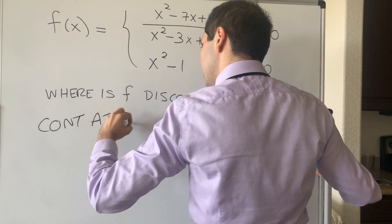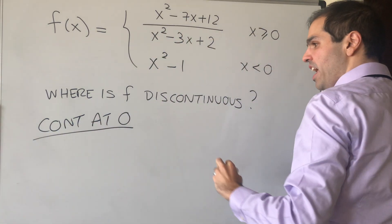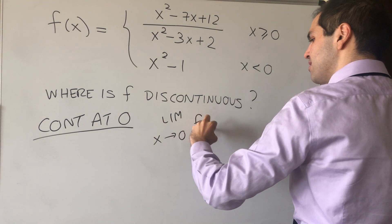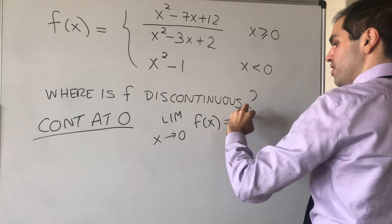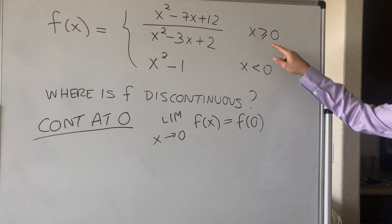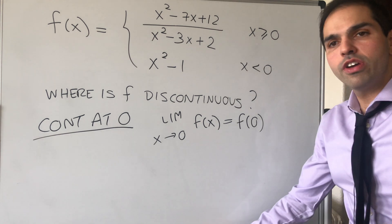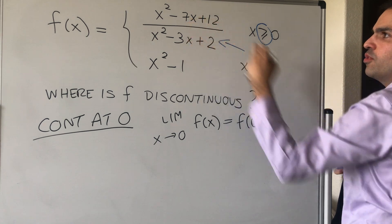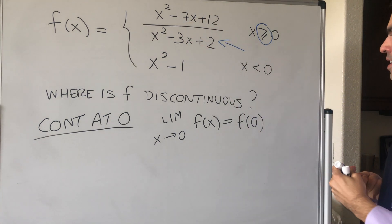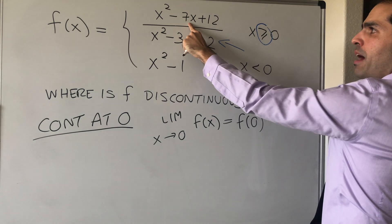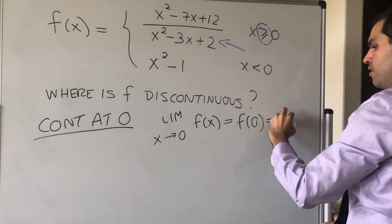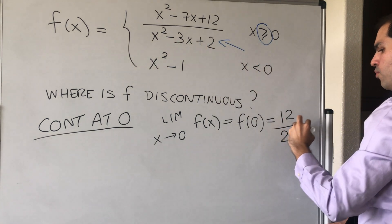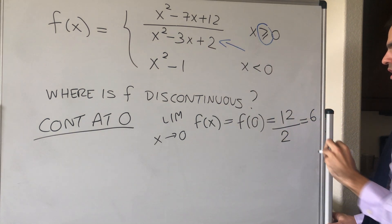So for continuity at 0, what we need to check is that the limit as x goes to 0 of f of x is or is not equal to f of 0. And for f of 0, because here we have a greater than or equal sign, what it means is we need to plug in x equals 0 in this definition. And if you do this, you get 0 squared minus 0 plus 12, and 0 squared minus 0 plus 2, which is 2, and that's 6.